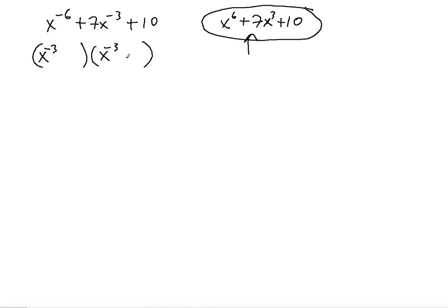The remaining terms are based on the 10 and the 7. You need factors of 10 — meaning two numbers that multiply to give 10 and add to give 7. Those factors are 5 and 2, because 5 times 2 is 10 and 5 plus 2 is 7. So it's going to be plus 5 and plus 2.